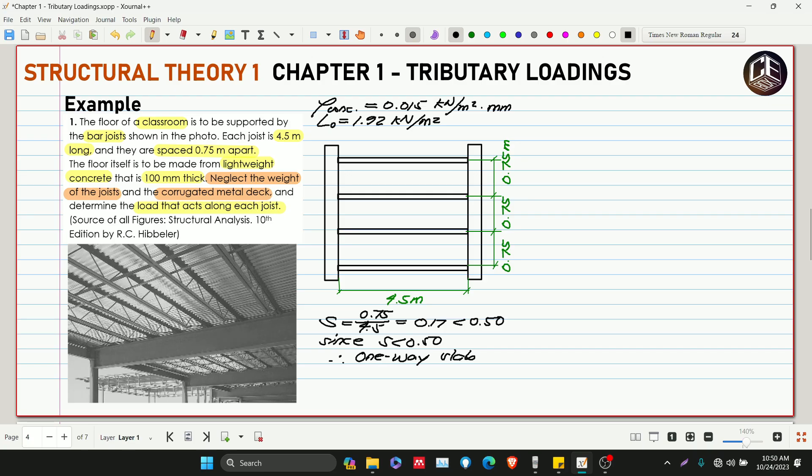So how is the distribution for this? It's half and half at the middle of each joist. These are the areas.